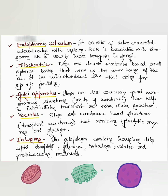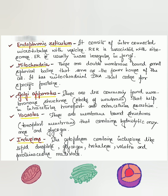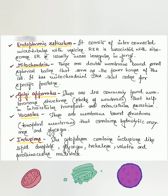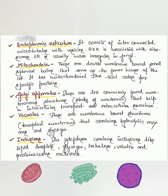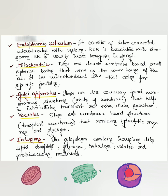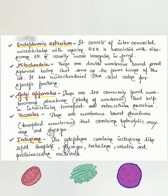Coming to cytoplasmic inclusions: the cytoplasm contains inclusions like lipid droplets, glycogen, trehalose, volutin, and proteinaceous material.